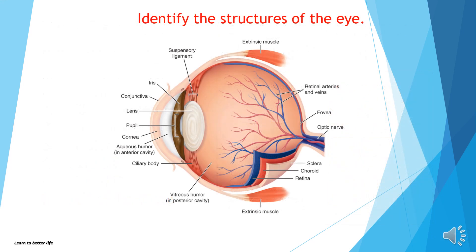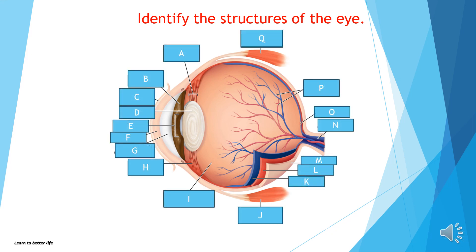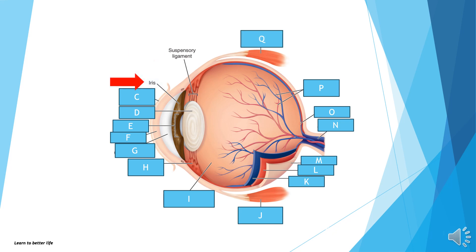Now, we are going to learn the structures of the eye. Are you ready? We will start with letter A. A is suspensory ligament. B is the iris. C is the conjunctiva. D is the lens. E is the pupil. F is the cornea. G is the aqueous humor in anterior cavity. H is ciliary body.